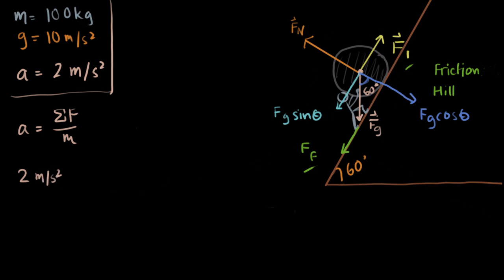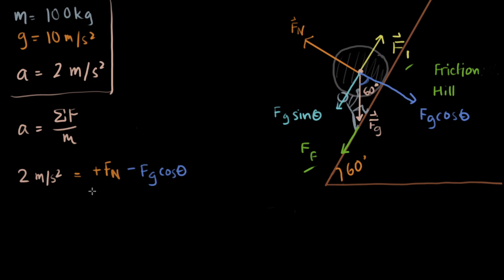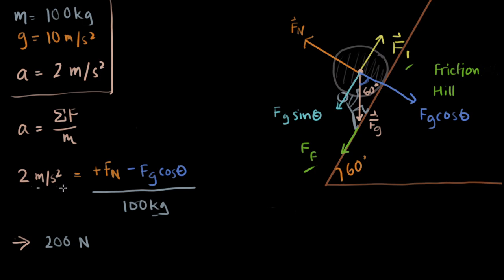So acceleration equals the net force over mass. In this direction we have an acceleration of 2 meters per second squared. We have the positive normal force upward and negative FG cos theta — the horizontal component of gravity. With a mass of 100 kg, last time we had 0 up here, but this time we have 2, so we multiply: 100 times 2 equals 200 Newtons.